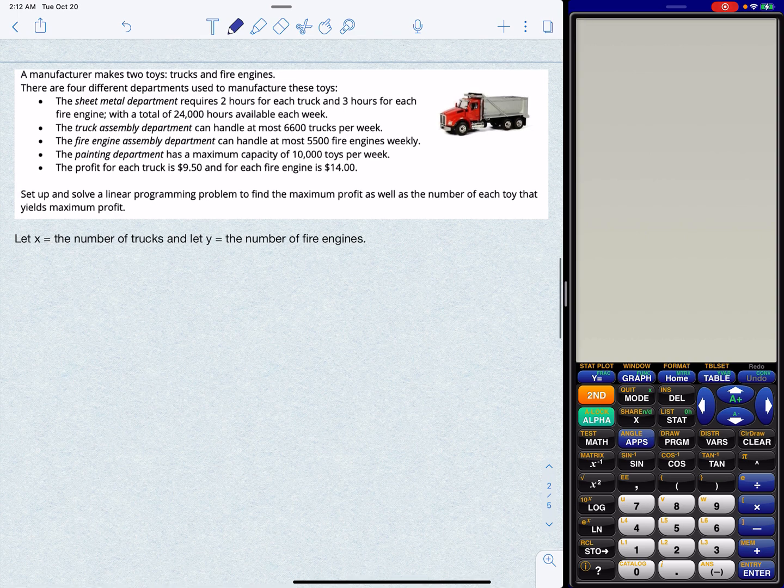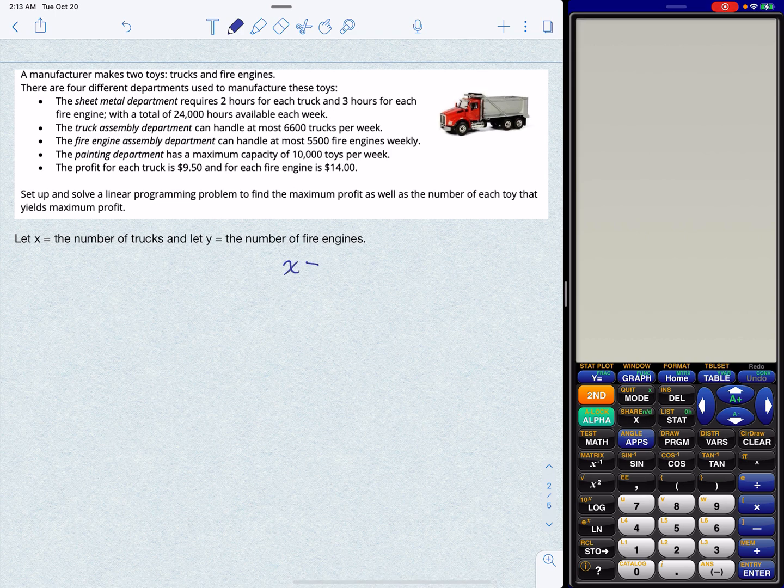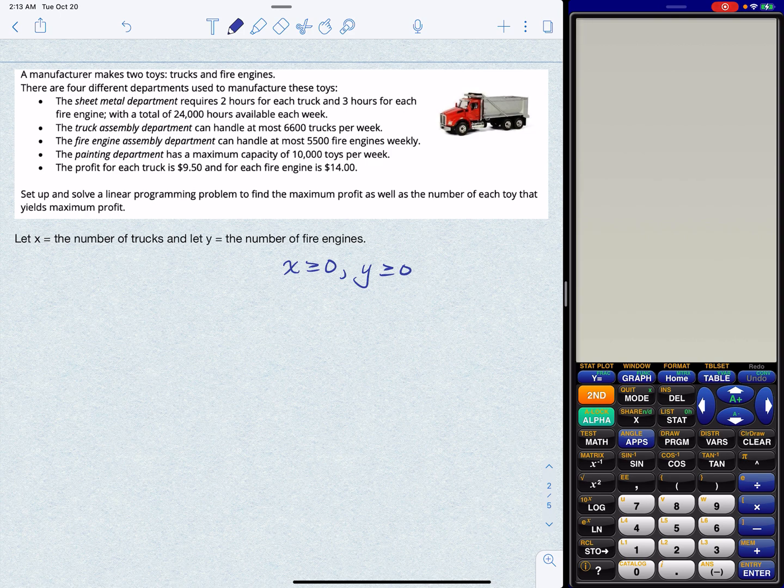All right, now that you've given it a read, you probably realize that there's a lot of constraints. The one thing to remember is that automatically we should write these down, and those are your non-negativity constraints. They might be covered elsewhere in the constraints anyway, but it never hurts to write those down.